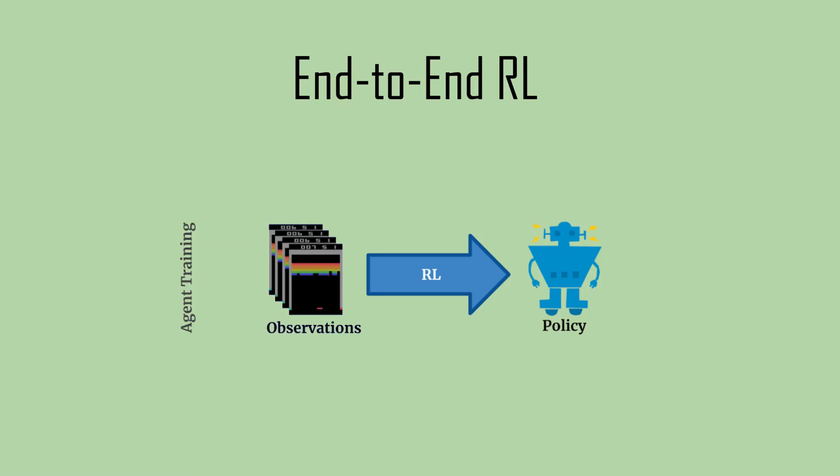In the last few years there has been a clear trend toward end-to-end reinforcement learning algorithms. That is algorithms that learn both perception and control starting from DQN that showed the capability of reinforcement learning to learn directly from pixels.